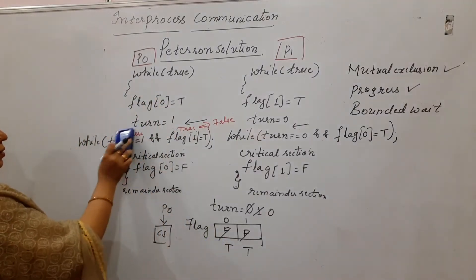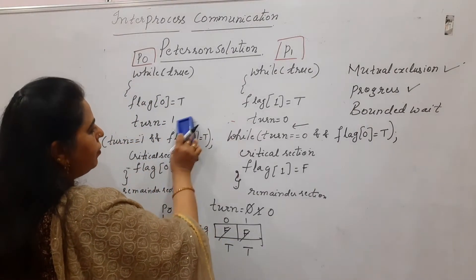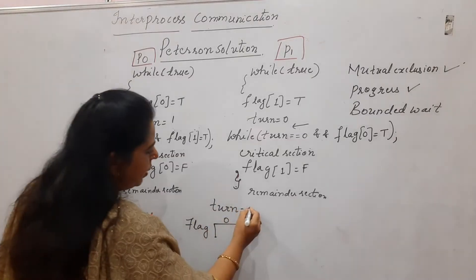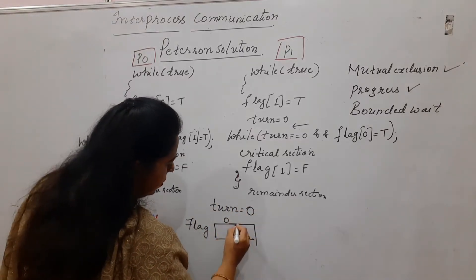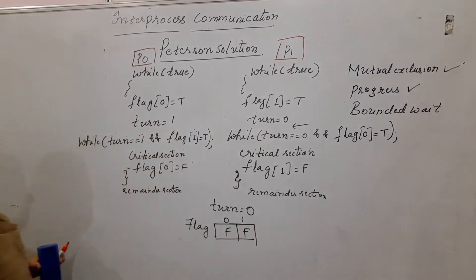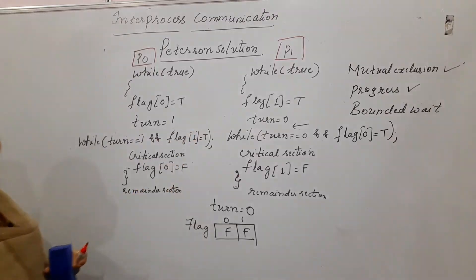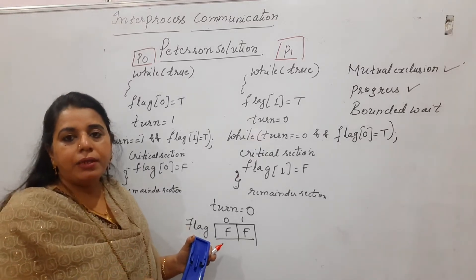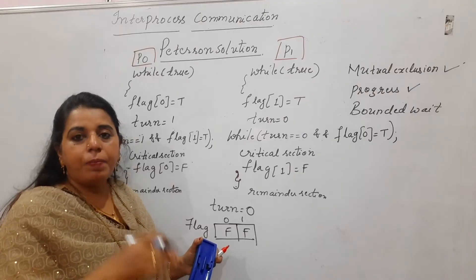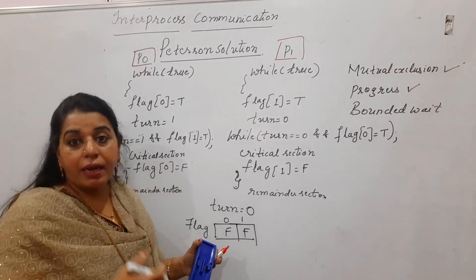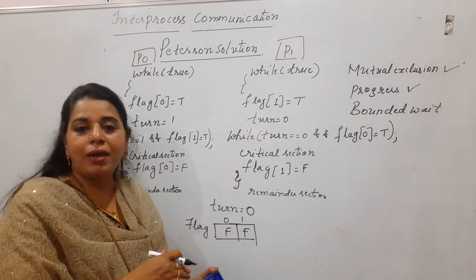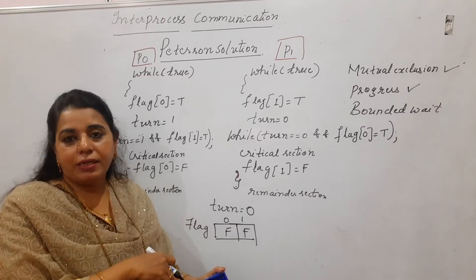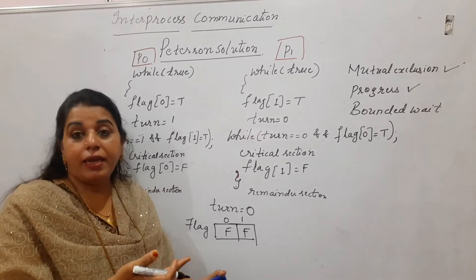Re-initializing for the bounded waiting check: flag array set to F for both, turn equal to zero. For bounded waiting, no process should wait an indefinitely long time. In this example, P0 starts executing. When P0 is in the critical section, P1 attempts to enter but is blocked due to mutual exclusion and is busy waiting.